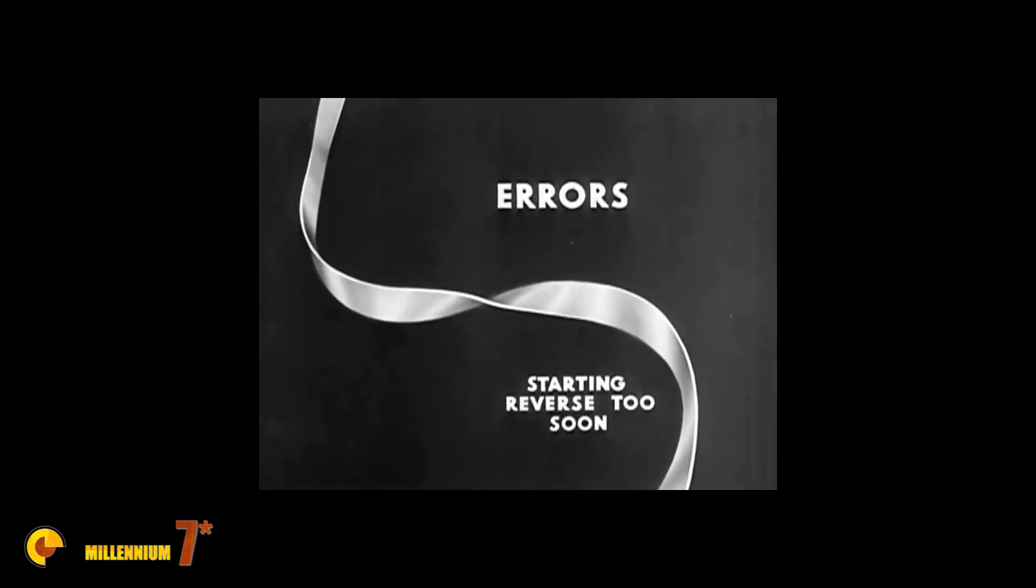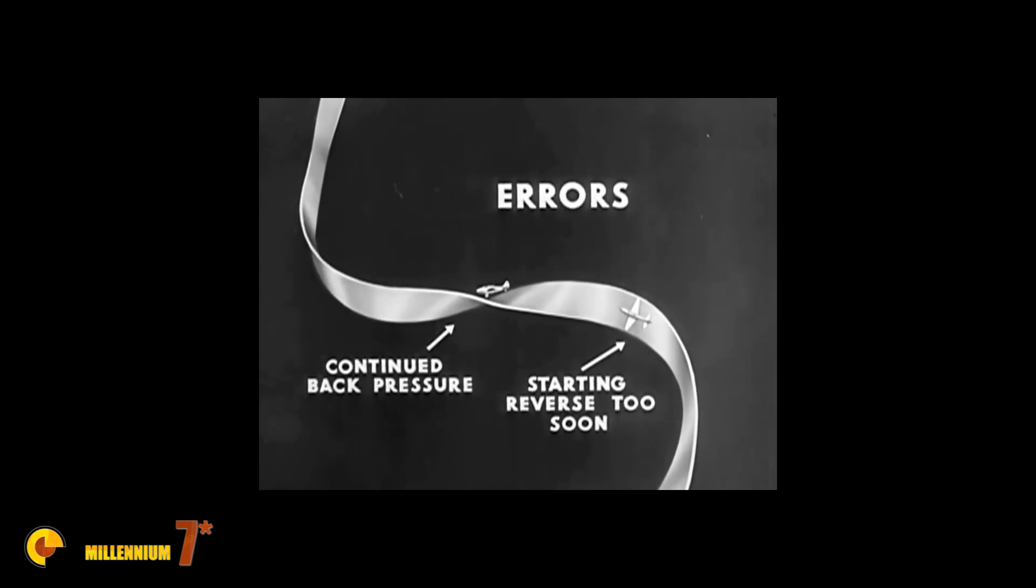Common errors in the vertical reverse are starting the reverse too soon before the turn is well begun, continued back pressure on the stick after the peak of the maneuver has been reached, and violent movement of the stick which may result in loss of control.